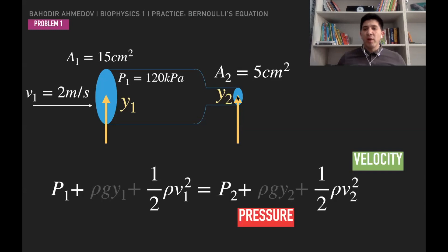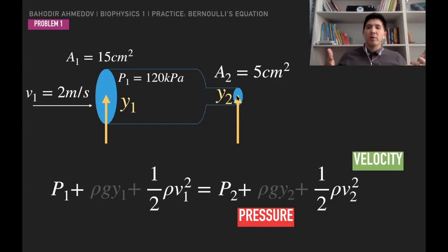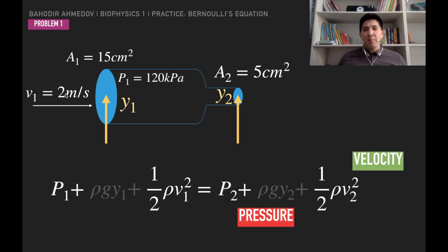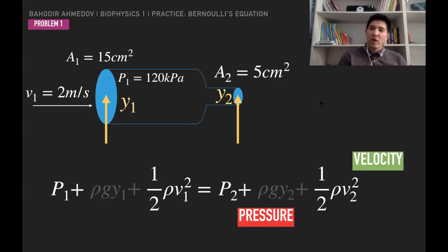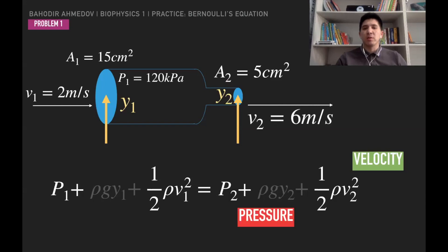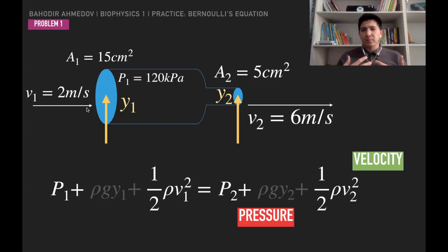To find the velocity at the second point, we use the concept of volumetric flow rate, which is constant throughout the pipe. The flow rate equals cross-section area times velocity: 15 × 2 = 30, which is constant. At the second point, area × velocity = 30, so with area = 5 cm², the velocity v2 = 30 / 5 = 6 m/s.